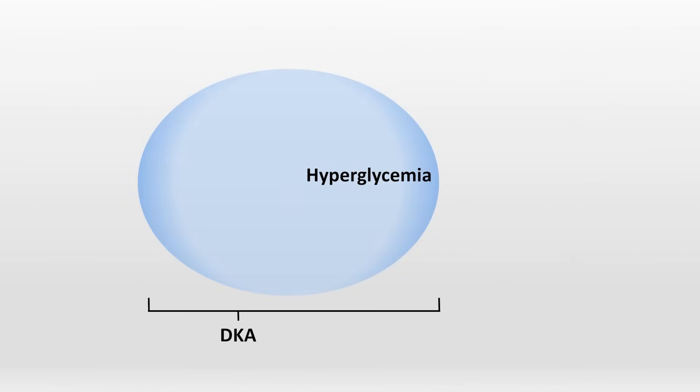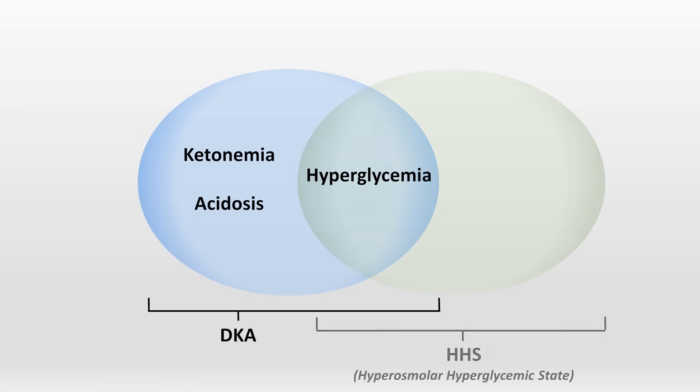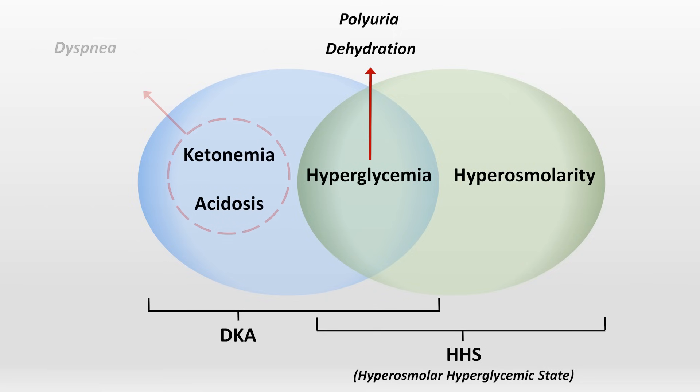As already mentioned, the hallmark features of DKA are hyperglycemia, ketonemia, and acidosis, while the hallmark features of HHS are hyperglycemia and hyperosmolarity. In both cases, the hyperglycemia leads to polyuria and dehydration. In DKA, the ketonemia and acidosis lead to dyspnea, which is usually on account of respiratory compensation for the metabolic acidosis.